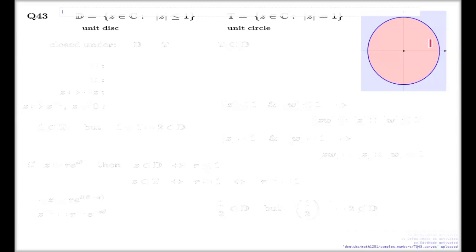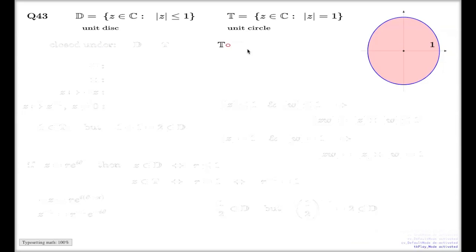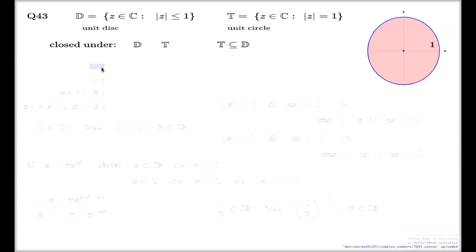I didn't actually say what the radius of this circle is — it's one. Now, obviously the unit circle is a subset of the unit disk. We're going to discuss what are the answers to the question whether D or T are closed under addition, multiplication, taking the negative, and taking the inverse in case Z is non-zero.